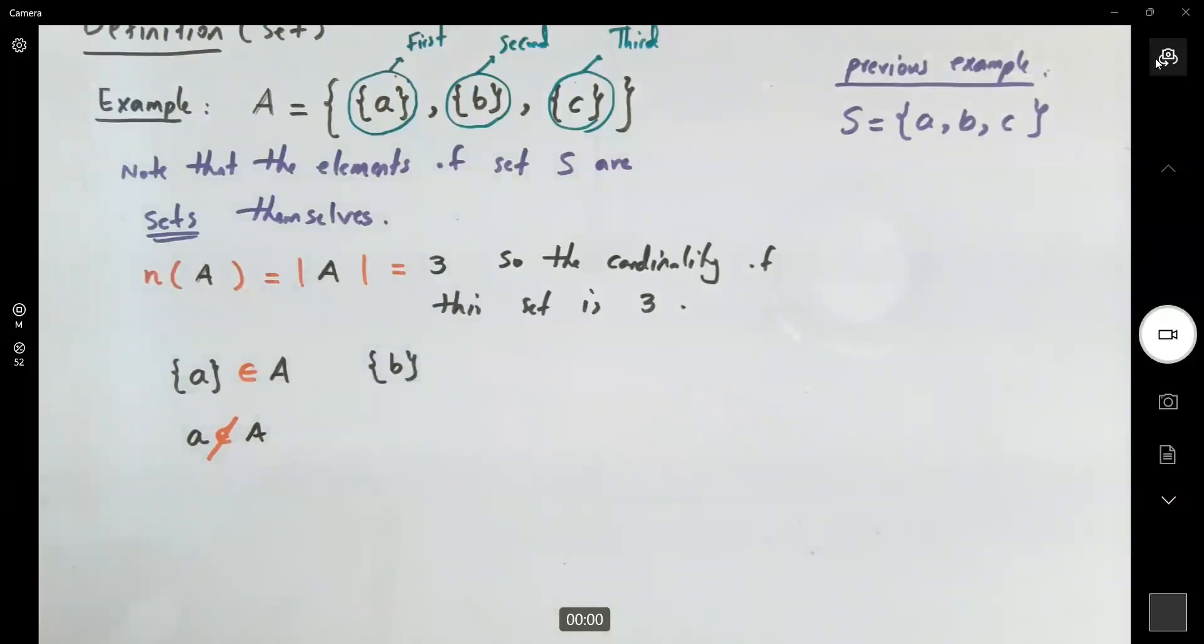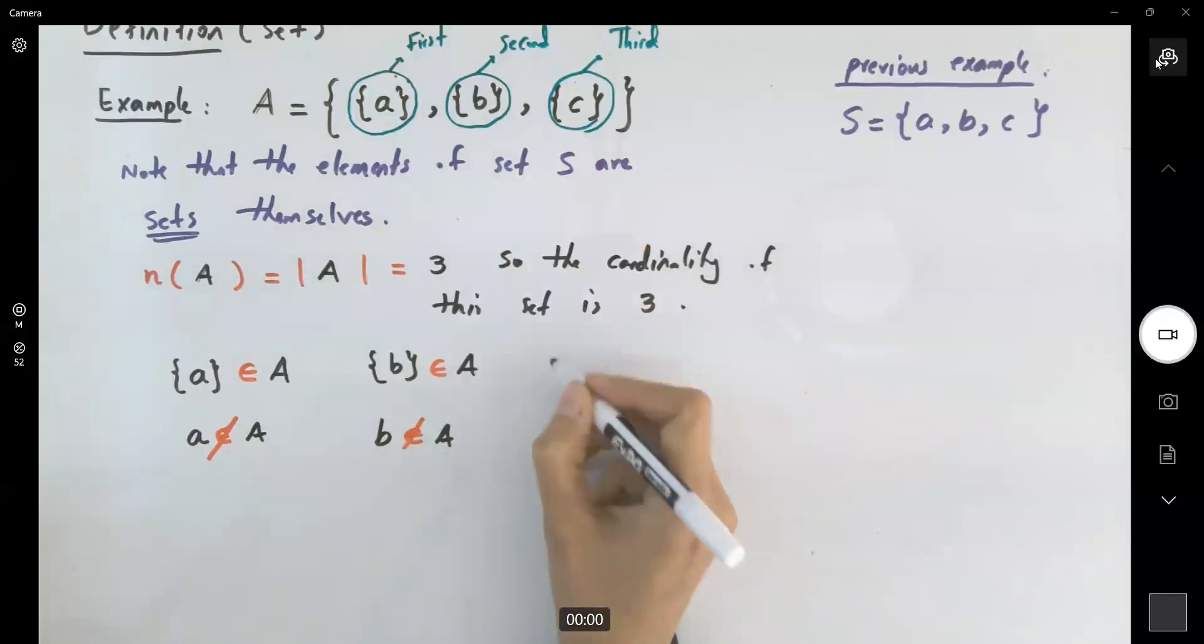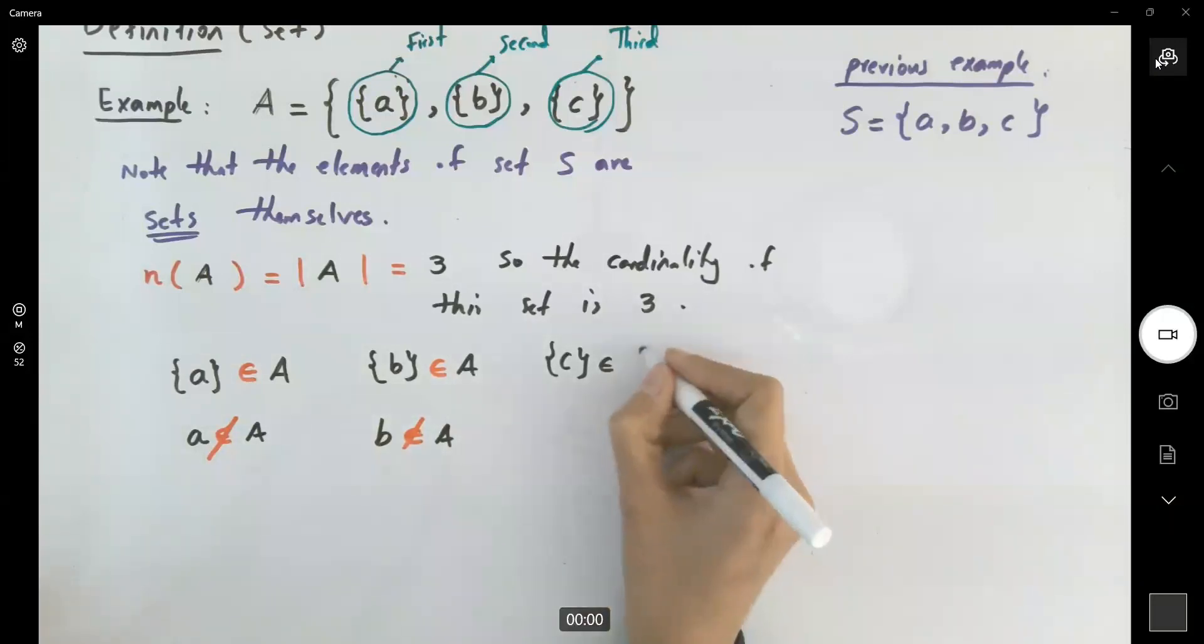Set including b is a member of this larger set, set A. Again, note that b itself is not a member. Of course not. You can see that right here. The members are sets themselves. And the same for c. And note that c is not in A.